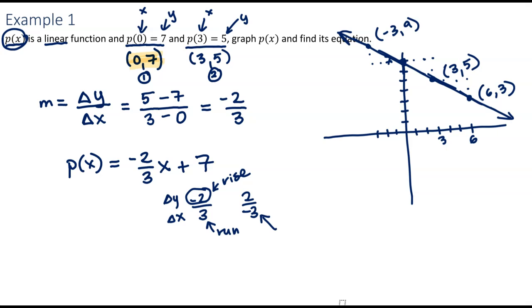Also note, I decided to just use that intercept and the point. But we were given 2 points. So I used this p of 0 equals 7. We could have also just gone p of 3 equals 5 to get straight to 3, 5 without counting out slope. But that counting out slope is really important. So that's what my graph looked like.